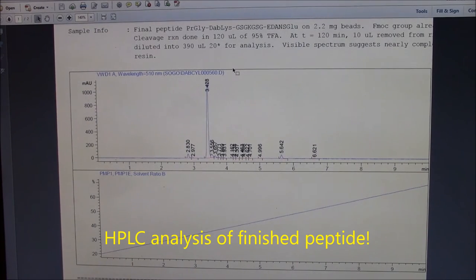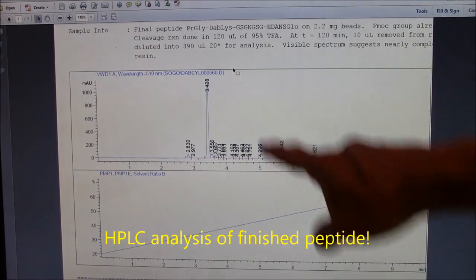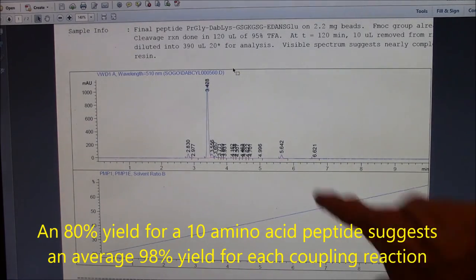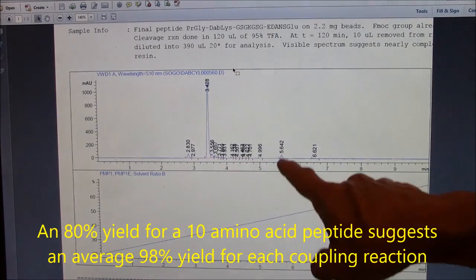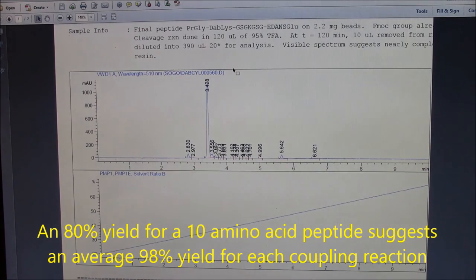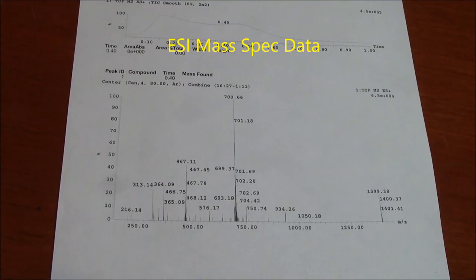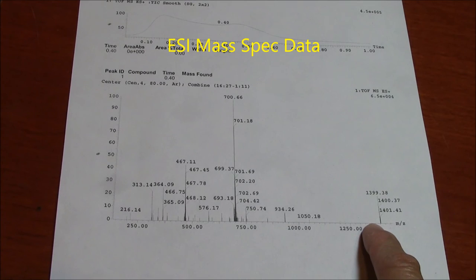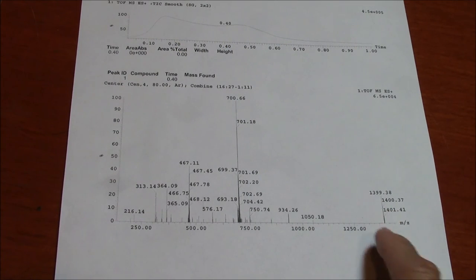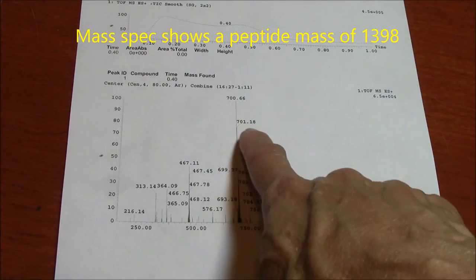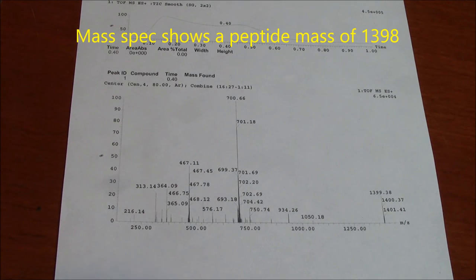Here's the HPLC analysis of my finished peptide. One major peak here, this is 80% of the area, a couple 5% peaks here and here, don't know what those are, but it looks good. This is electrospray mass spectral data from the peptide, showing a peptide mass of 1398. This is plus H. This is the doubly charged peptide with two hydrogens attached and it looks great.